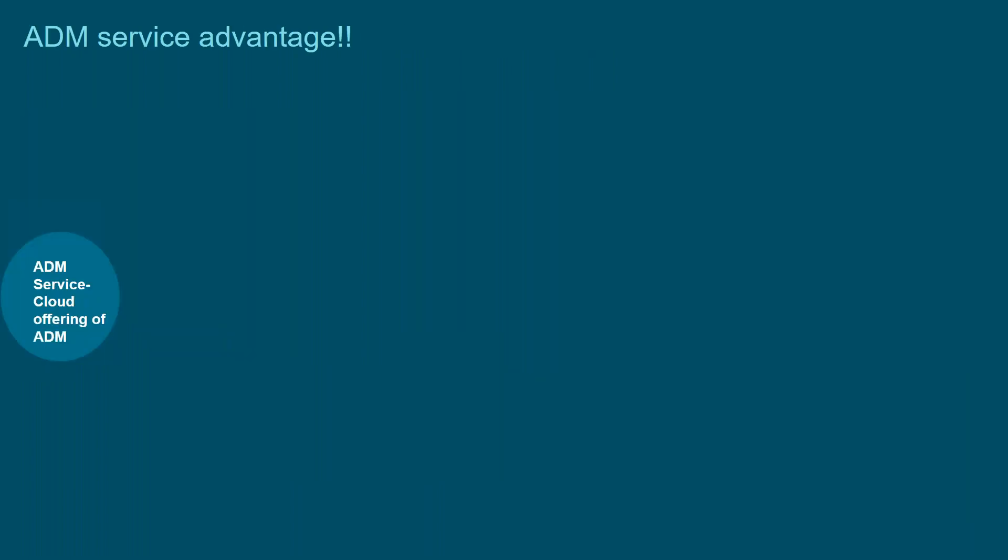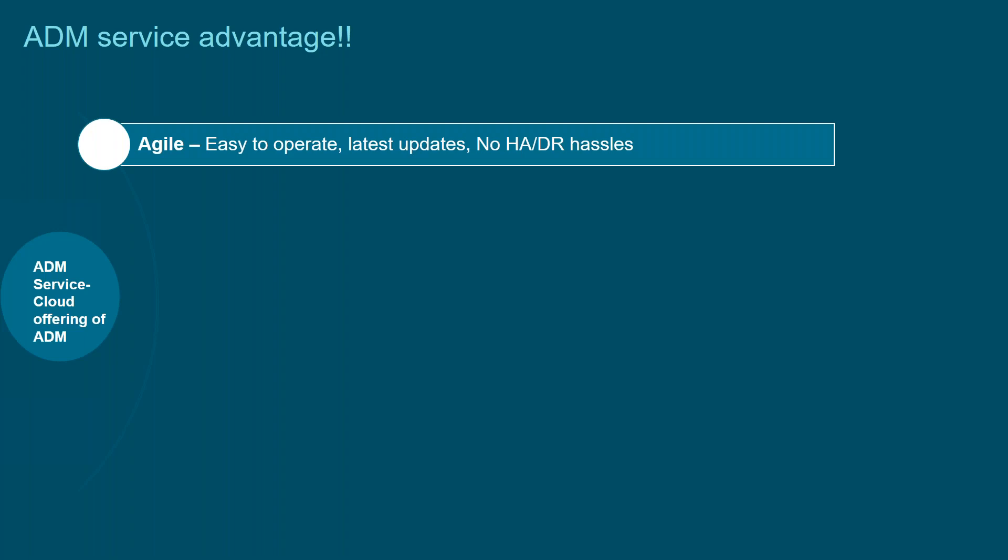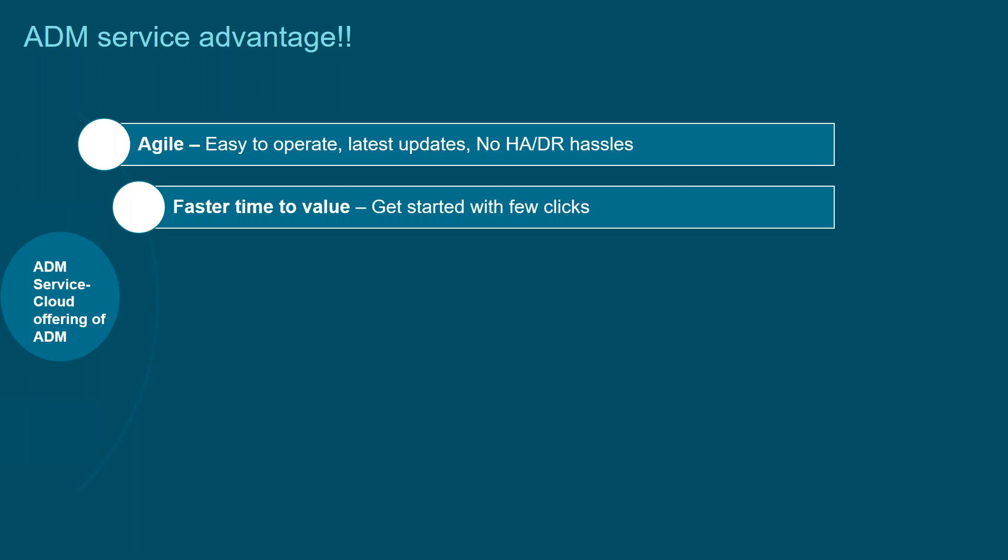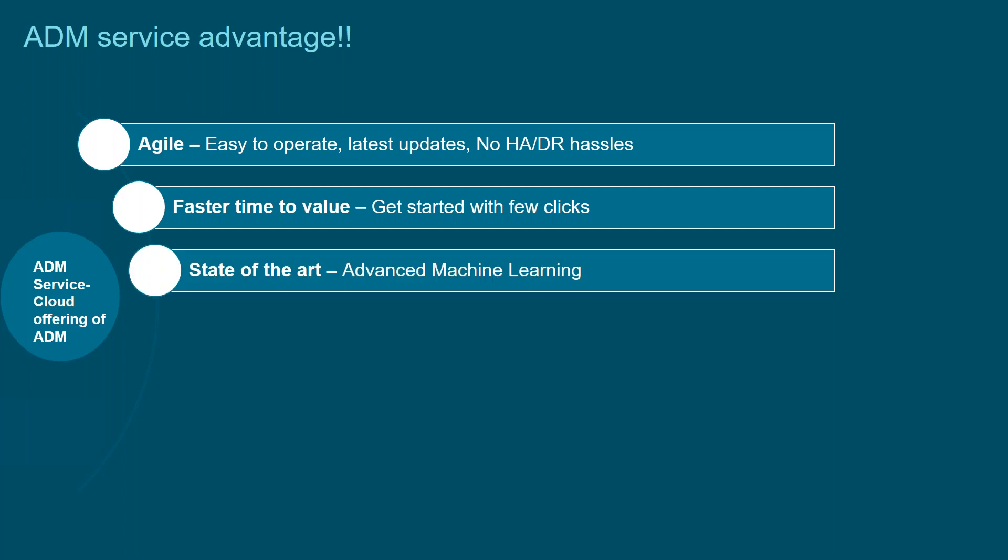Let's look at the advantages of moving to ADM Service. It's very easy to operate — you get started in three quick steps and always get the latest feature updates. ADM Service has a feature release every two weeks versus six weeks for ADM on-prem. You don't have to worry about managing your ADM deployments since it's a cloud-based solution — no hassle of maintaining HA or managing DR for your ADM instances. Faster time to value: get started with a few clicks, no license required to explore the solution.